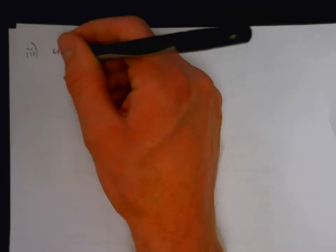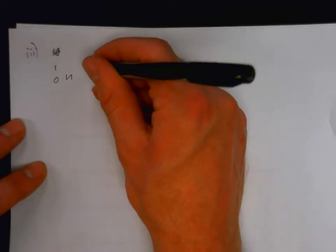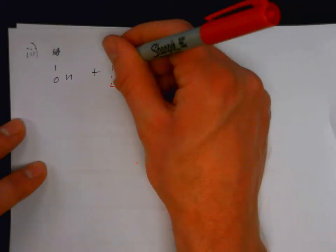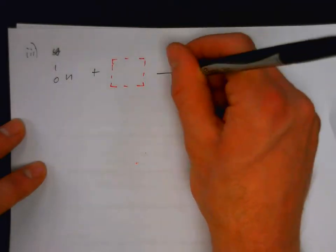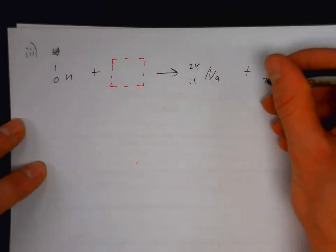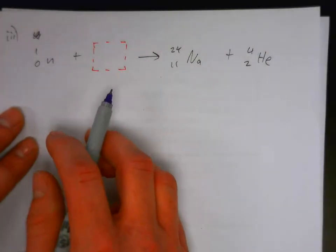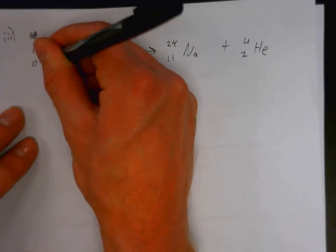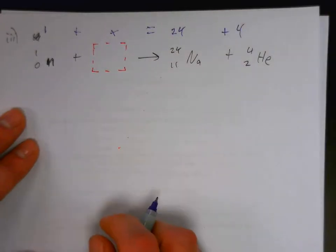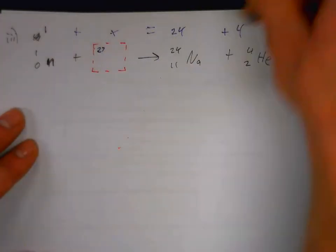Let's do this one: one over zero neutron plus the unknown makes 24 over 11 sodium plus four over two helium. Again, similar approach. We have one plus x equals 24 plus four, so x equals 27. And zero plus y equals 11 plus two, so y equals 13.